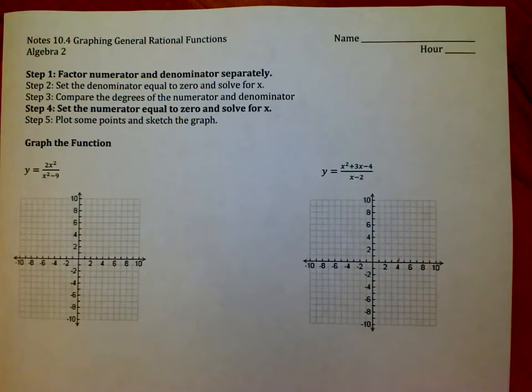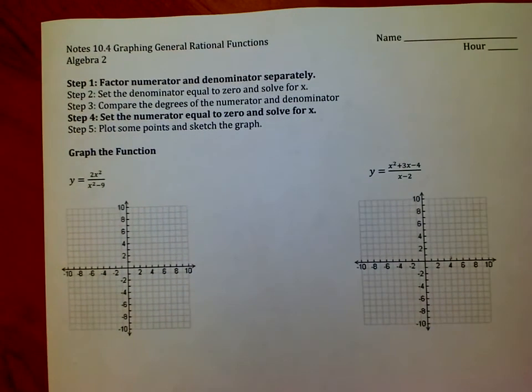Yesterday was like an introduction, some basic stuff. Today we're just going to go a step further. Notice that I've taken my steps from last time and turned it into five steps now. We're going to add the things that are in bold. Those are new because we didn't have to worry about those last time when we were graphing our rational functions.